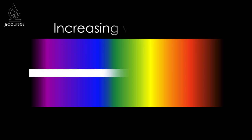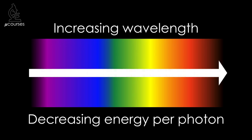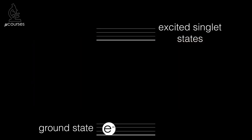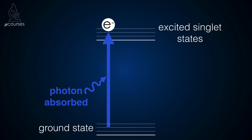Our eyes see wavelength as color. As the wavelength of light increases, the amount of energy in a photon of light decreases. This diagram shows the fluorescence reaction. We begin with the electrons in the fluorophore in an unexcited ground state. We illuminate the fluorophore with light and a photon collides with the fluorophore. If that photon has the right amount of energy, it can cause an electron to move into an excited singlet state.